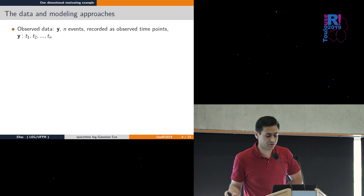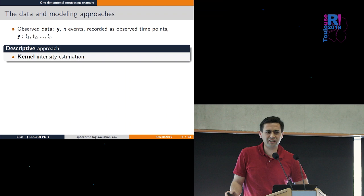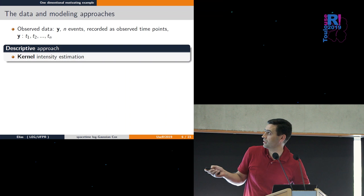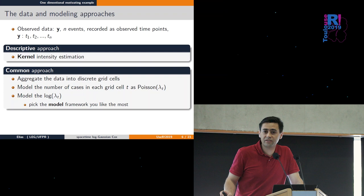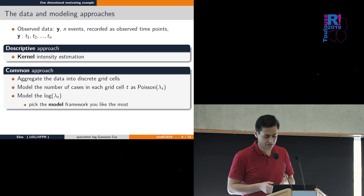We have n events with observed time points t1, t2 up to tn - just one variable. A descriptive approach might be kernel density estimation. Another approach is aggregating data into grid cells like monthly or quarterly, then modeling counts per cell as Poisson regression with spline functions or random effects.